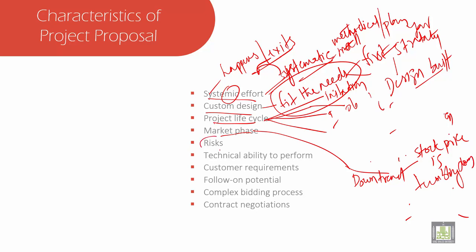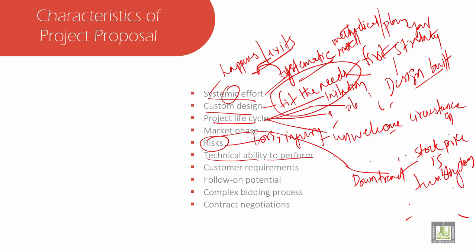Every time, whatever you do, there is a risk in everything. Risk is like a loss, injury, or any other unwelcome circumstances — it is an uncertain condition that occurs without expectation. We also have technical ability to perform, which is a technical skill to carry out an associated task — technical roles like IT, information technology, engineering, mechanics, science, and money-related finance.